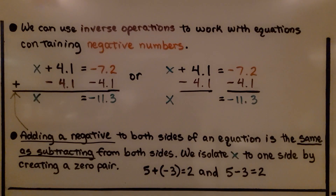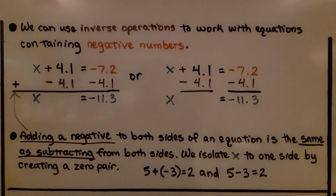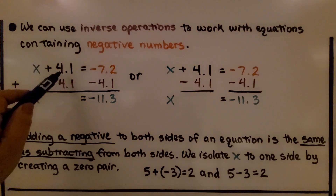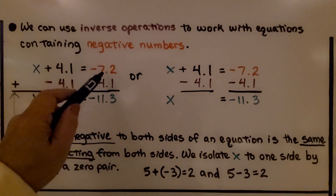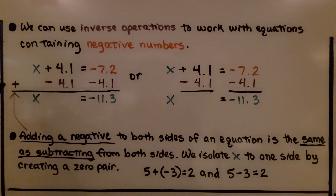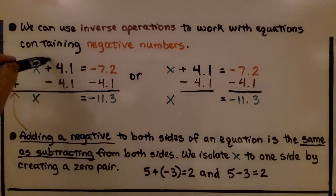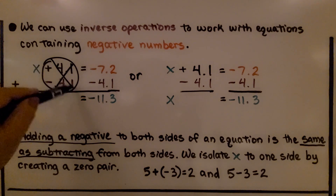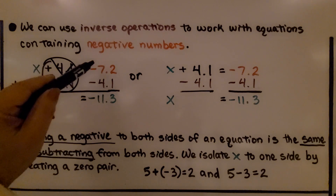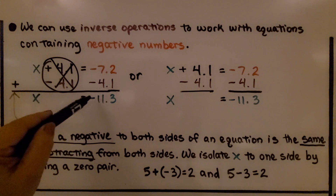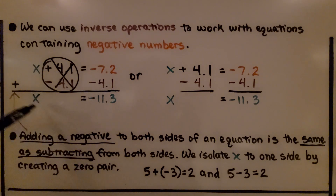We can use inverse operations to work with equations containing negative numbers. If we have x plus four and one-tenth is equal to negative seven and two-tenths, we can add a negative four and one-tenth to each side of the equation. That's going to create a zero pair and eliminate it. And if we have negative seven and two-tenths and we add a negative four and one-tenth, that's going to be negative eleven and three-tenths. x is equal to negative eleven and three-tenths.